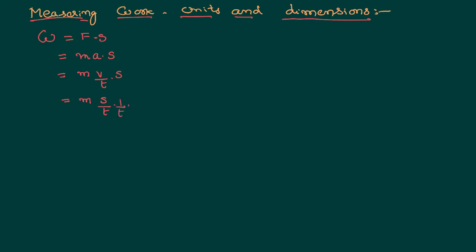There is one more time in the denominator. So if you identify the physical quantities existing in work, there is mass, there is square of the displacement, and time squared in the denominator — that is inversely proportional. Taking mass, length, and time as fundamental quantities, we can express work done as mass power 1, displacement power 2, time power minus 2. This way of representing a physical quantity in terms of fundamental quantities is called dimensional formula.